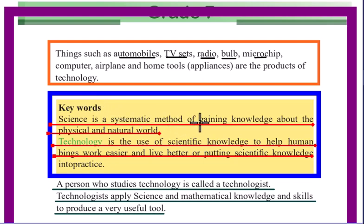Science is a systematic method of gaining knowledge about the physical and natural world. Science and technology are interrelated — technology can be applied using science, and science can use technology.